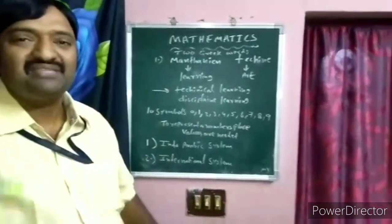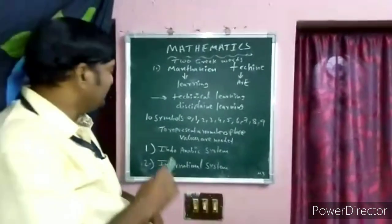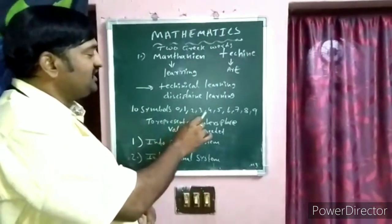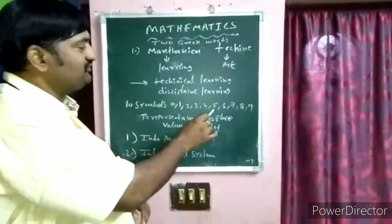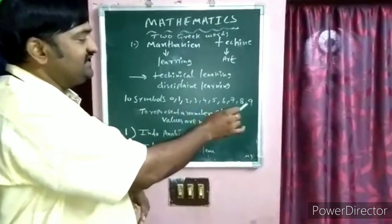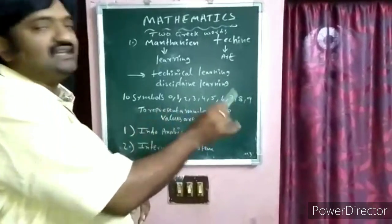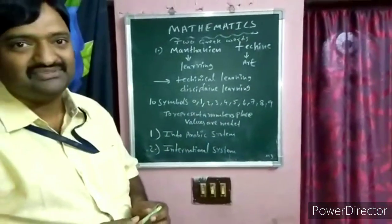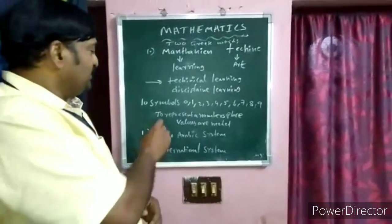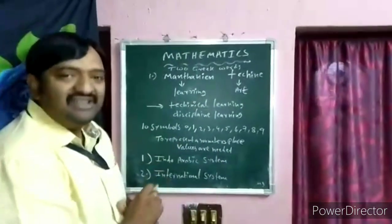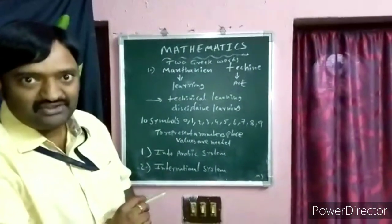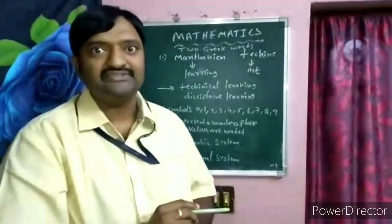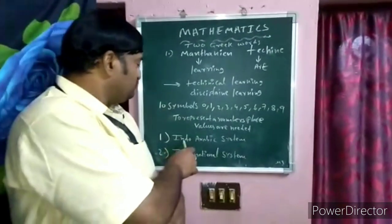In mathematics we have ten symbols: zero, one, two, three, four, five, six, seven, eight, nine. These are the ten symbols we use. Using these ten symbols we create numbers. To represent a number we need a place value.